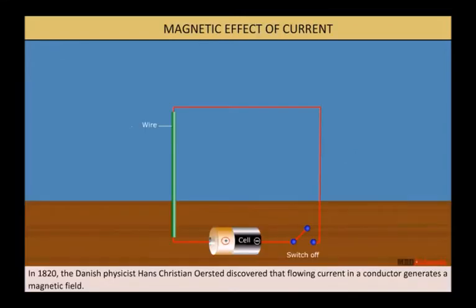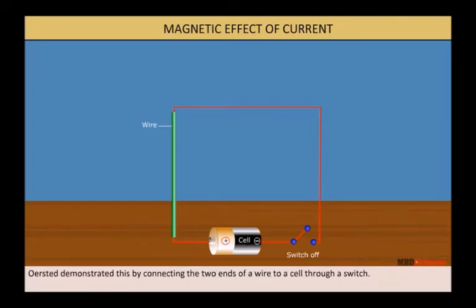In 1820, the Danish physicist Hans Christian Orsted discovered that flowing current in a conductor generates a magnetic field. Orsted demonstrated this by connecting the two ends of a wire to a cell through a switch.